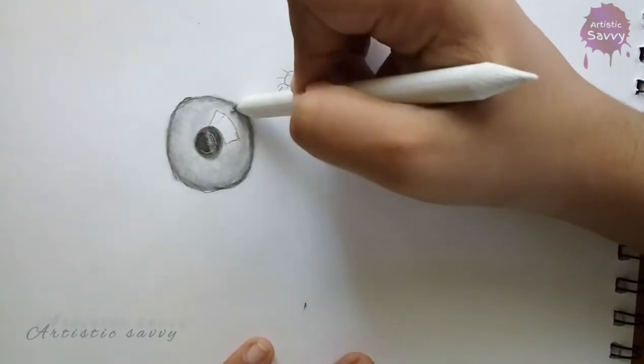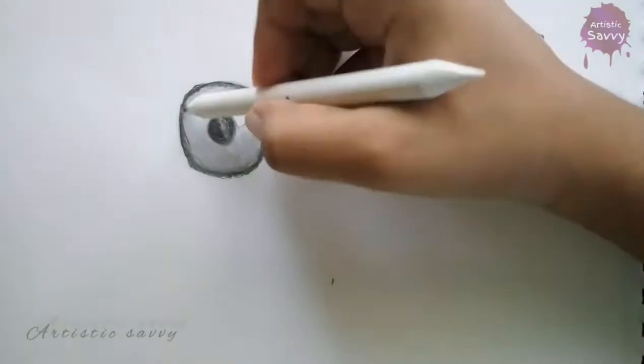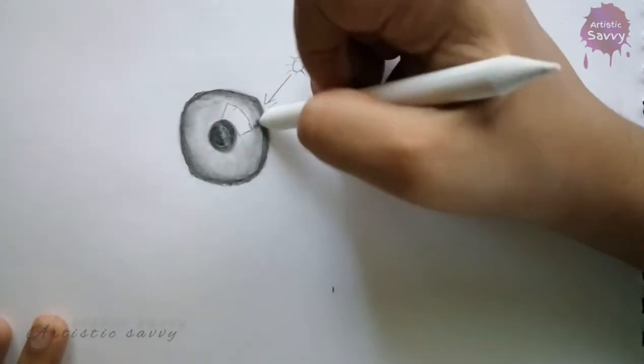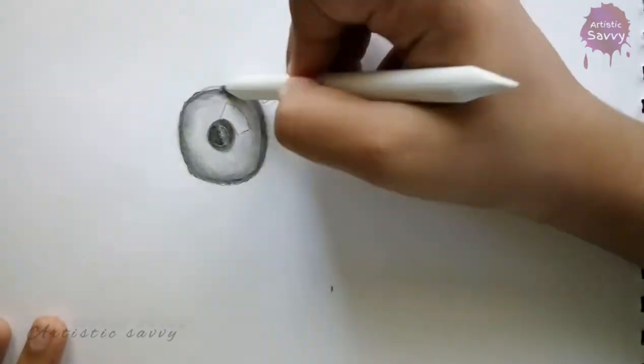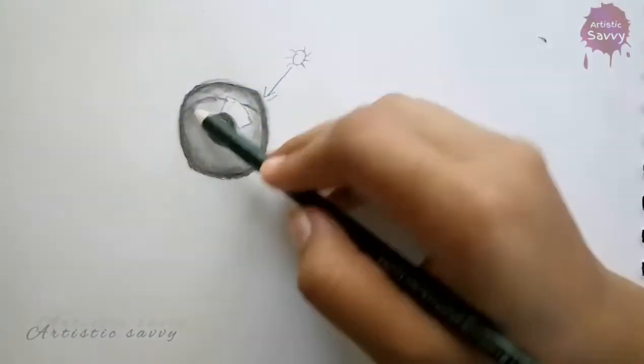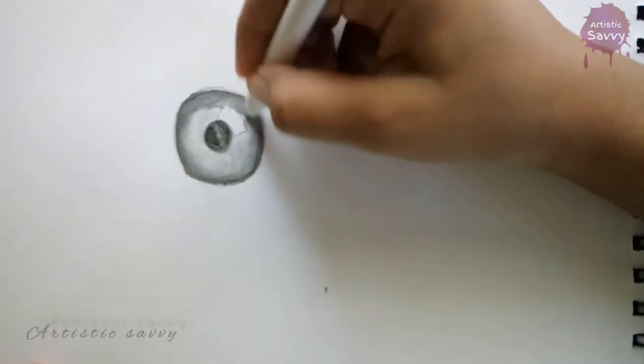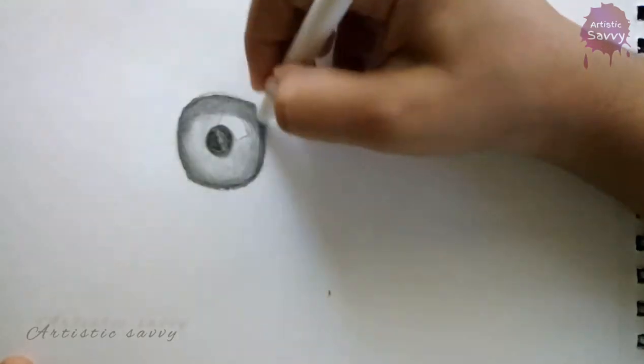After blending this, I'm going to use a 6B pencil to go over it once more and blend it as well. Now the shadow of the upper lid will be there on our iris, so you need to shade that part and blend that too.